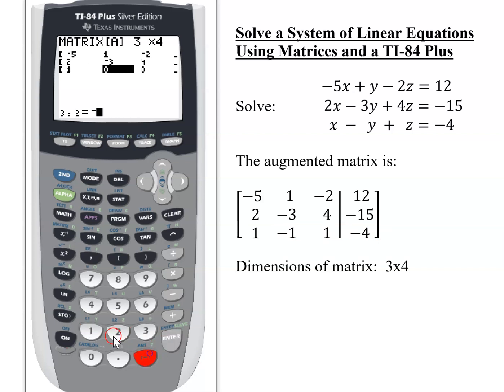Now I need to work on row three. 1, enter, negative 1, enter, 1, enter, negative 4, enter.